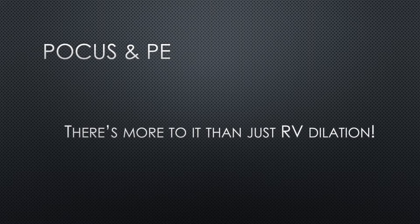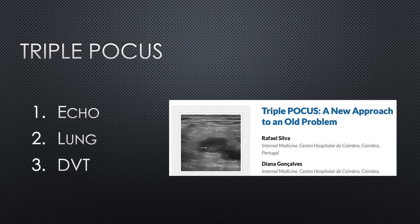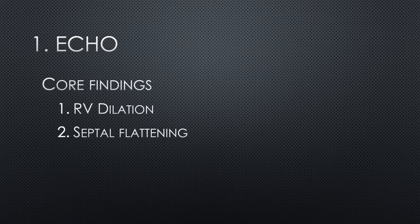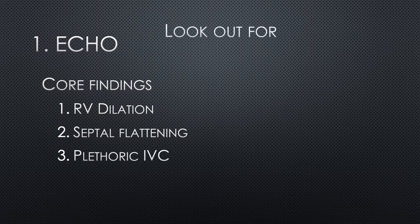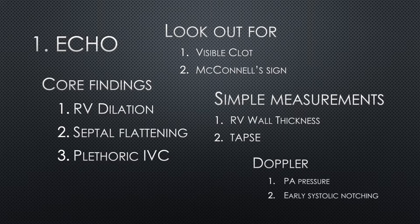There is more to it than just RV dilation. Over the next half an hour, we'll go through every aspect of how you can use point-of-care ultrasound to assess patients with suspected PE. The term triple POCUS has been coined recently and it refers to echo, lung, and DVT. In terms of echo, I like to divide this into core findings — RV dilation, septal flattening, and a plethoric IVC — then things to keep an eye out for like a visible clot and McConnell sign, simple measurements like RV wall thickness and TAPSE, and finally more advanced Doppler measurements including pulmonary artery pressure and early systolic notching.